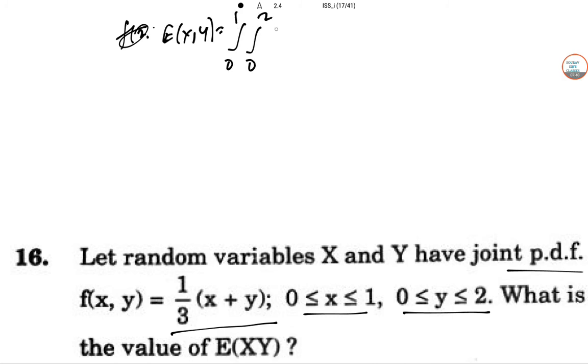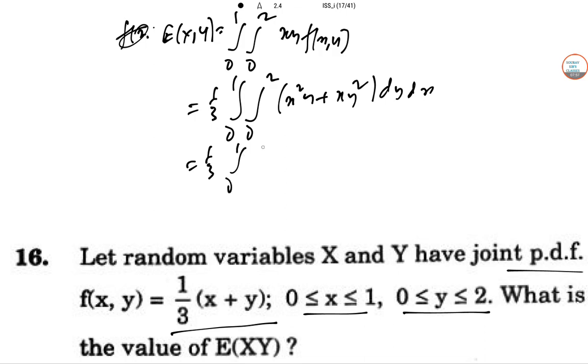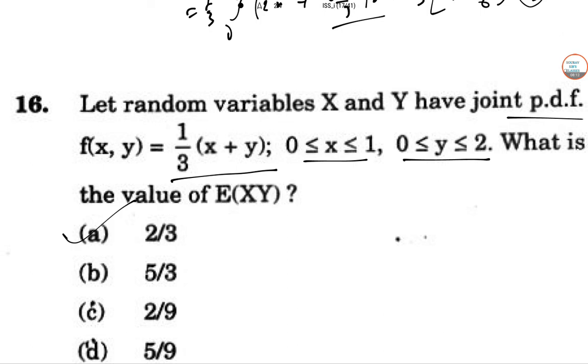0 to 1, 0 to 2, X, Y, F of X, Y. So one third, 0 to 1, 0 to 2, X square Y, X, Y square, DY and DX. So this is one third. So 1, 0 to 1, this we put. So 2X square, 8X by 3, DX. And after that, we put the value 2 by 3, 8 by 6. After doing this integration. So this will give you 2 by 3. So option number A is correct.